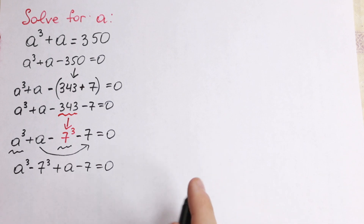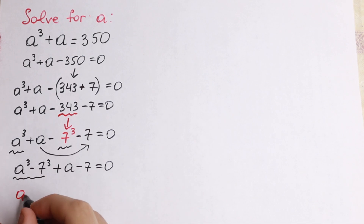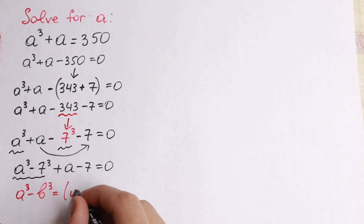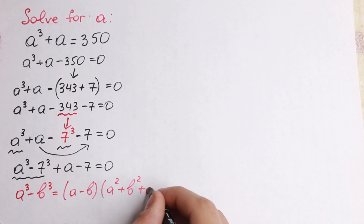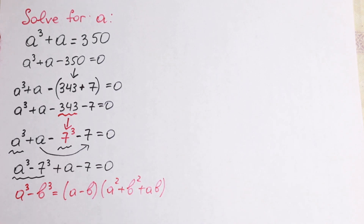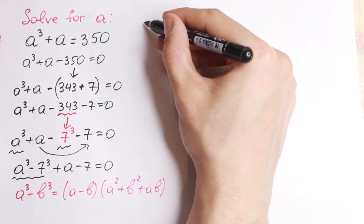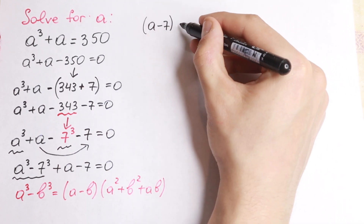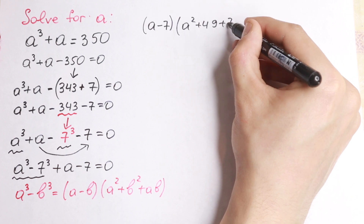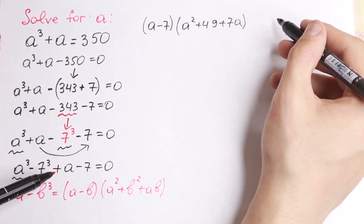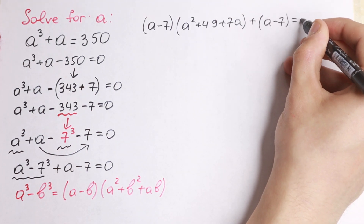What are we going to do next? Of course — difference of cubes. We need the formula: a cube minus b cube equals a minus b, times a square plus b square plus ab. This is our formula. If we apply this formula right here, we will have a minus 7, times a square plus 49 plus 7a. So this is our difference of cubes formula applied, but here we have as well a plus a minus 7 equal to 0.